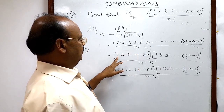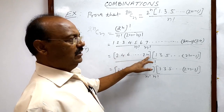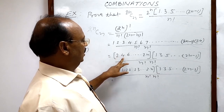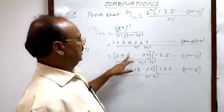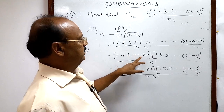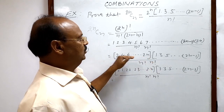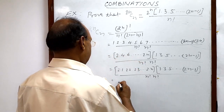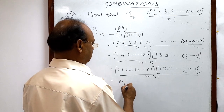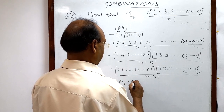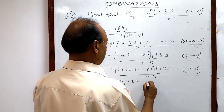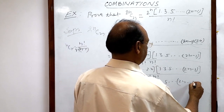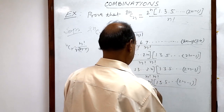N times. This is 2 into 1, 2 into 2, 2 into 3, up to 2 into n. So 2 is a factor in the first number, again 2 is a factor in the second number, similarly 2 is a factor in the nth number. So 2 into 2 into 2, n times — we can write 2 to the power n. Inside the bracket we are left with 1 into 2 into 3 up to n, and also 1 into 3 into 5 up to (2n minus 1), all divided by n factorial into n factorial.